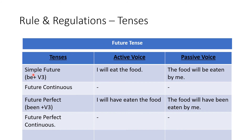Future tense: in simple future, add be + V3. I will eat the food — The food will be eaten by me. In future perfect, add be + V3: I will have eaten the food — The food will have been eaten by me. Note: there is no future continuous and no future perfect continuous in active and passive voice transformation.